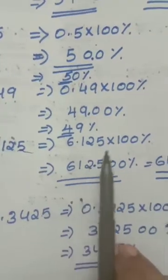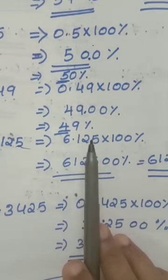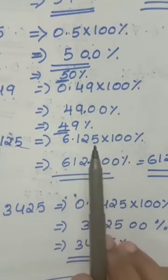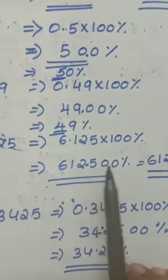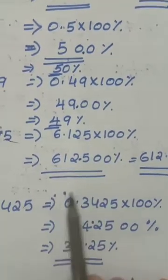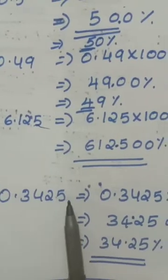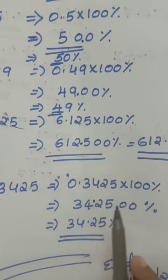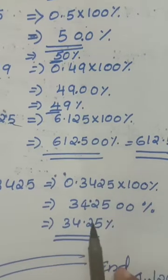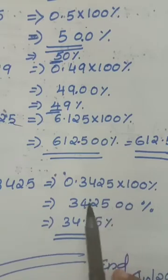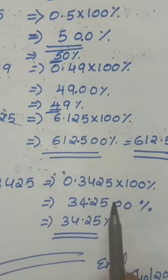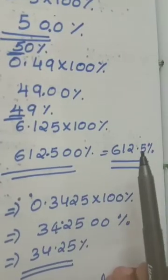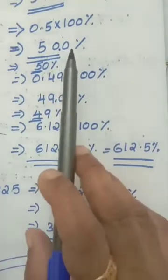6.125 multiplied by 100: after decimal take 2 digits, move the point — result is 612.5 percentage. Multiplication time decimal moves forward; dividing time decimal moves back. 0.3425 multiplied by 100 percentage: take 2 digits after decimal — result is 34.25 percentage. The last zero in a decimal number has no value at all — you can write without the zero. So 50.0 means 50 only.